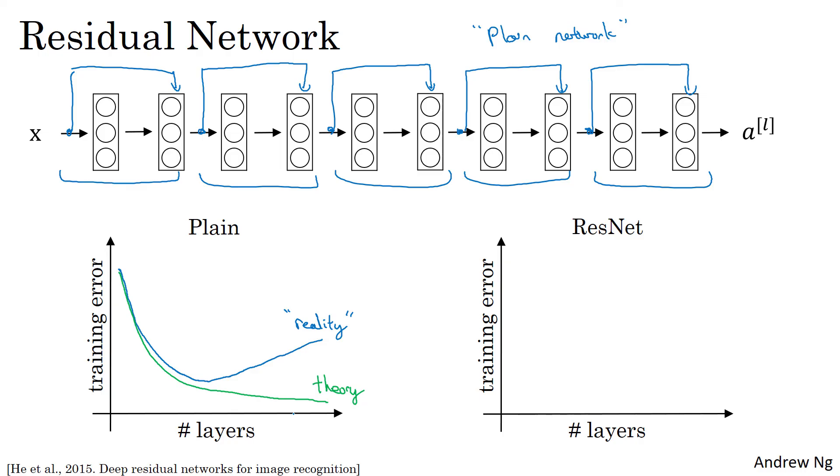But what happens with ResNet is that even as the number of layers gets deeper, you can have the performance of the training error kind of keep on going down. Even if we train a network with over a hundred layers, and now some people are experimenting with networks that are over a thousand layers, although I don't see that use much in practice yet. But by taking these activations, be it X or these intermediate activations, and allowing it to go much deeper in the neural network, this really helps with the vanishing and exploding gradient problems, and allows you to train much deeper neural networks without really appreciable loss in performance. And maybe at some point, this will plateau, this will flatten out, and it doesn't help that much to have deeper and deeper networks.